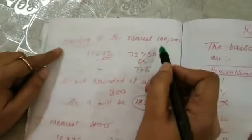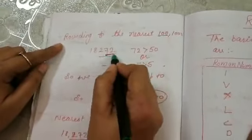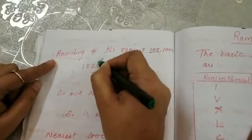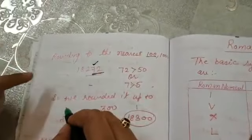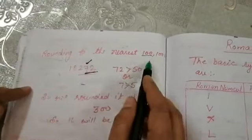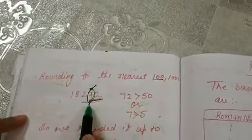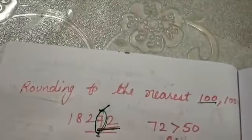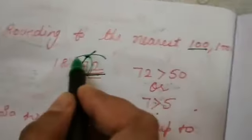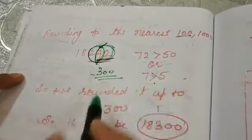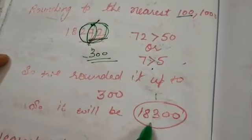Now we will start nearest to 100 and nearest to 1000. When you are doing nearest to 100, you have to see the last 2 digits. You will see the ten's place. In nearest 10 you have seen one's place, but in nearest 100 you have to see the ten's place. So ten's place is 7. 7 is greater than 5. So because we are doing 100, here will be round off 300. So the answer will be 18,300.